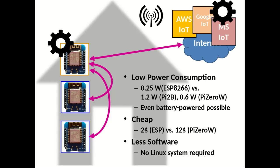To summarize: the idea is that you can use the ESP8266 as a local MQTT broker and as a control application, all on one small controller with very low power consumption. An ESP8266 has an average consumption of a quarter of a watt, compared to at least 1.2 watts for a Raspberry Pi 2, or 0.6 watts for a Pi Zero with Wi-Fi - still more than twice as much. You can even consider running an application battery-powered with an ESP. It's much cheaper - an ESP costs about $2 versus $12 for a Pi Zero. You also need less software, no Linux system, no Linux expertise.